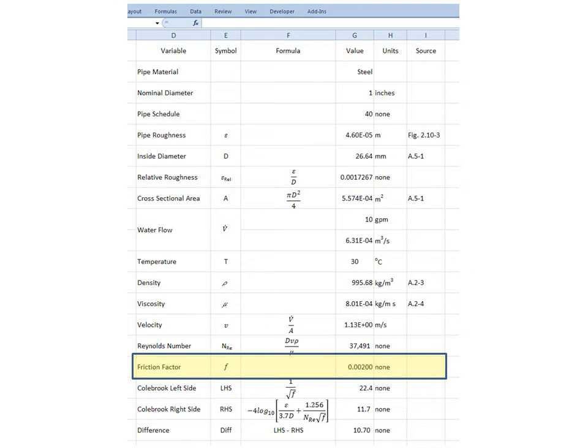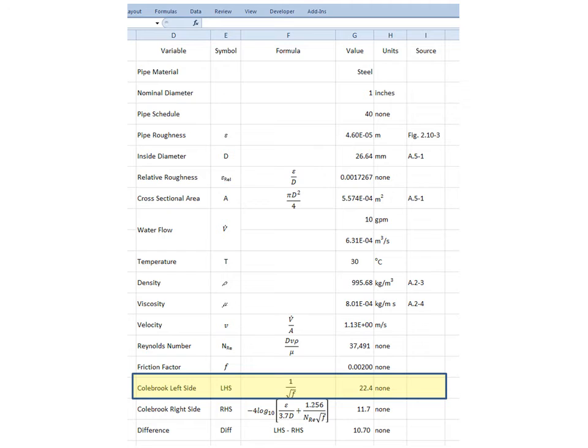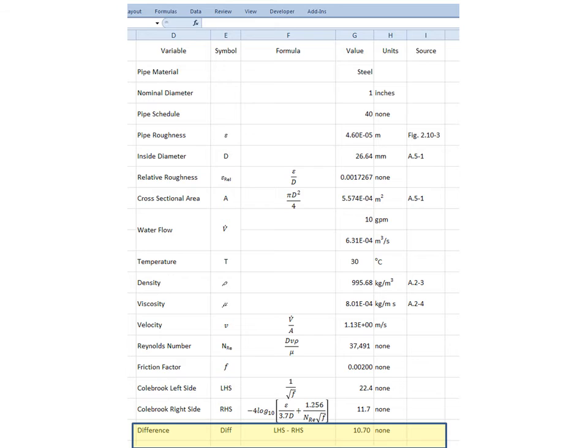Now we need to calculate our friction factor using the Colebrook equation. We don't know exactly what it will be, since it appears implicitly on both the left-hand side and right-hand side of the Colebrook equation. So the first thing we're going to do is just guess a value. In this case, I select 0.002. Calculating the left-hand side of the Colebrook equation, 1 over the square root of f gives us a value of 22.4. And the right-hand side of the equation, putting in the values, we calculate that to be 11.7. And the difference between the left-hand and right-hand side of the equation is 10.7. This indicates that the value of the friction factor has not been selected to give us a difference of 0. And I'll show you how to do this in the next slide.